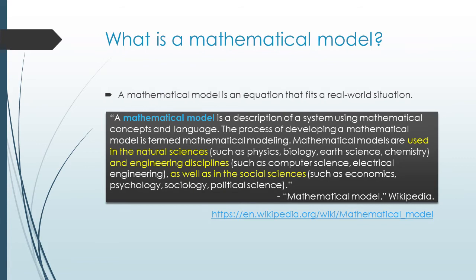First, let's start with what it means to write a mathematical model. A mathematical model is an equation that fits a real world situation. I pulled this from Wikipedia because it does a nice job of explaining it: a mathematical model is a description of a system — a real world situation — using mathematical concepts and language, basically an equation.